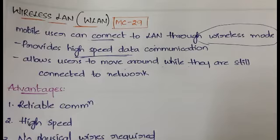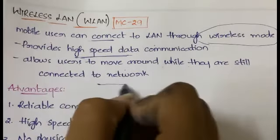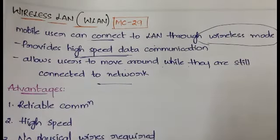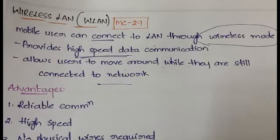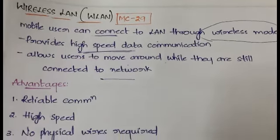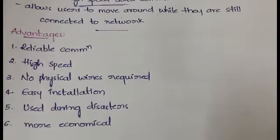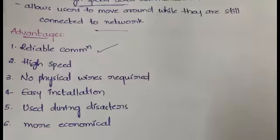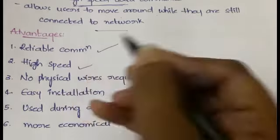Within the particular range of a network, you can move from one place to another with the help of wireless LAN, but if you are using wired LAN you have to sit in that particular place only. That is the simple introduction about wireless LAN. Now coming to the advantages and disadvantages — number one is reliable communication. Since there is no physical connection, you can rely on and trust it.